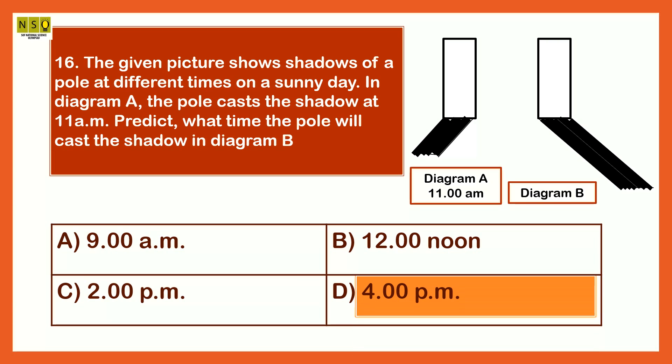Let me explain. In the morning and evening time, the sun is at eastwards and westwards respectively to the pole. The sun's rays will fall on the pole from sidewards, hence the shadows formed in the morning and evening time will be the longest.